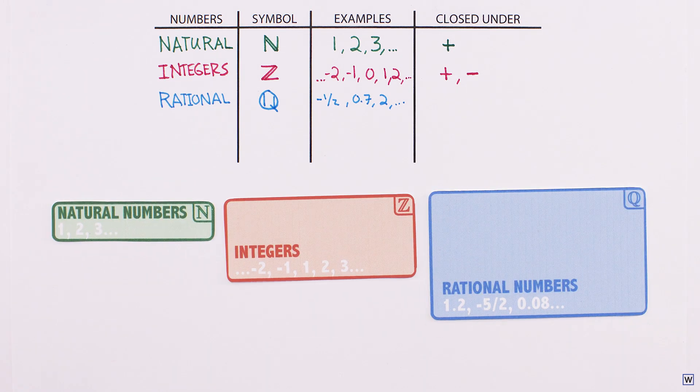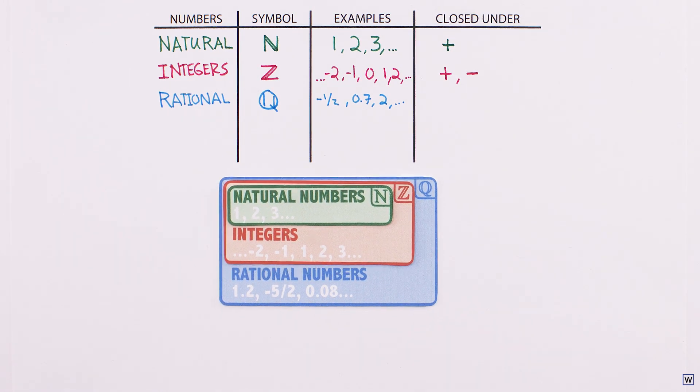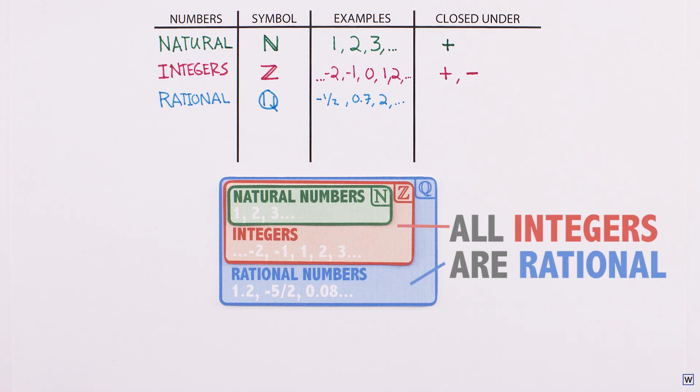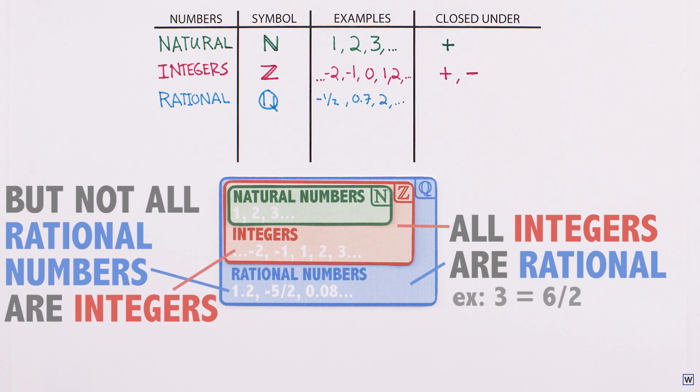Venn diagrams are pretty useful here, because they help us visually express the idea that one set includes another. All integers are rational numbers, because we can always express them as a ratio of two integers, but not all rational numbers are integers.